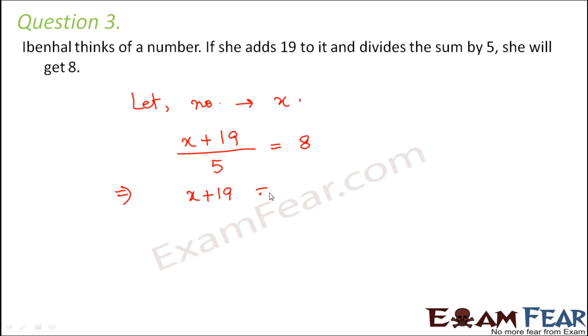So this becomes X plus 19. We move 5 to right hand side. So it becomes 8 into 5. So X plus 19 is equal to 8 into 5. That is 40. So we can say X is equal to 40 minus 19. Therefore, X is equal to 21. So 21 is the number that she thought of.